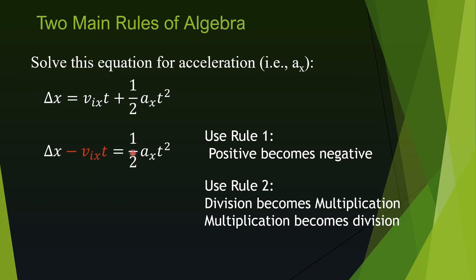Two is dividing everything here, so when it goes to the other side it's going to multiply everything. To represent that I am putting this parenthesis. It means 2 is multiplying both of these terms. And similarly, t squared is multiplying aₓ, so when it goes to the other side it's going to divide.